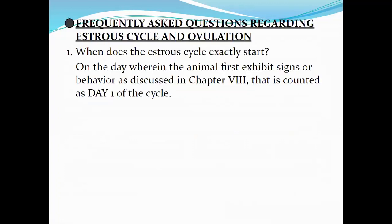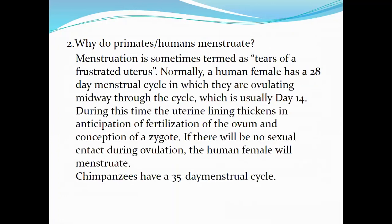Frequently asked questions about the estrus cycle: When does the estrus cycle exactly start? The day wherein the animal first exhibits signs or behavior of estrus is counted as day one of the cycle. Why do primates and humans menstruate? Menstruation is sometimes termed the tears of a frustrated uterus. A human female has a 28-day menstrual cycle in which ovulation occurs midway, usually day 14. During this time the uterine lining thickens in anticipation of fertilization. If there is no sexual contact during ovulation, the human female will menstruate. Chimpanzees have a 35-day menstrual cycle.